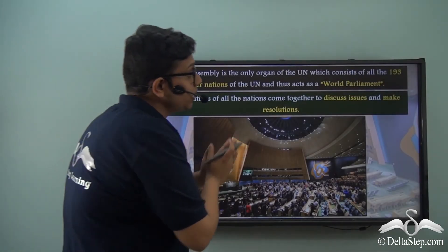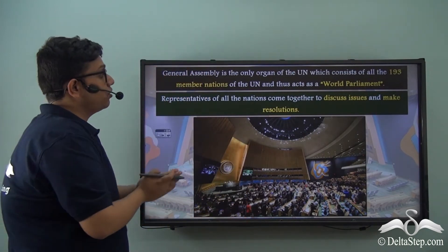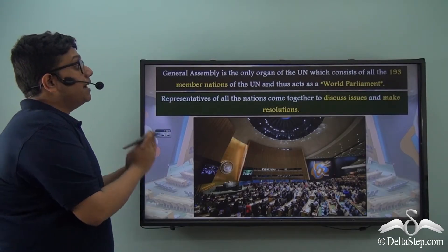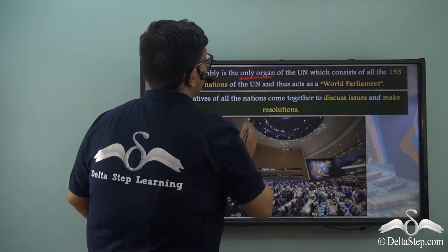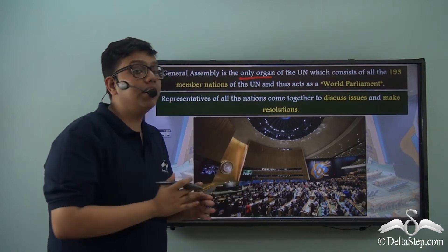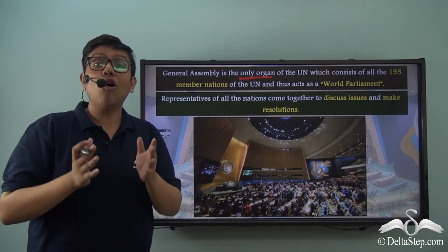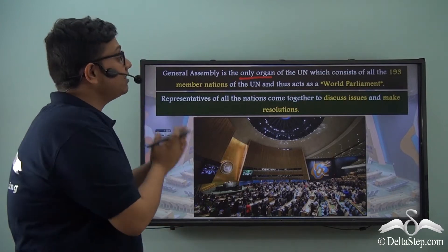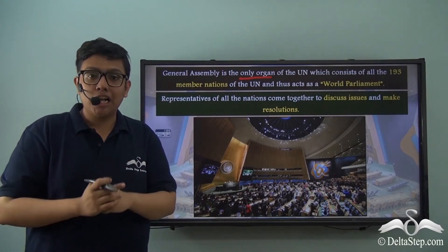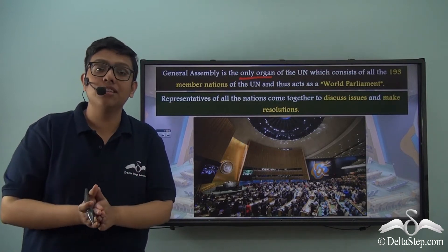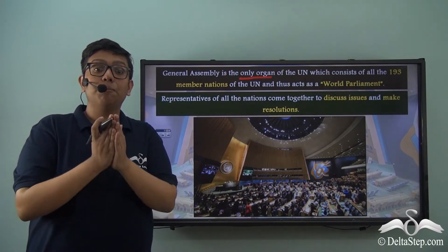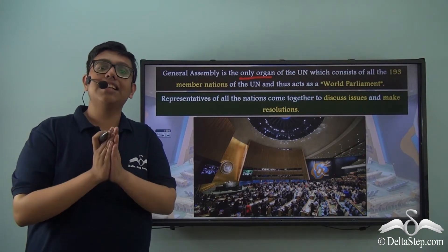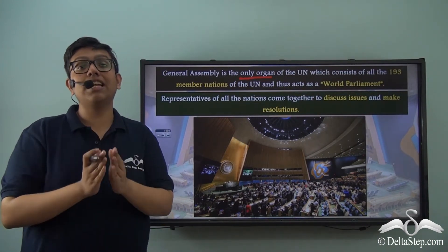The 193 member nations of the United Nations are members of the General Assembly as well. In fact, the General Assembly is the only organ of the United Nations where all 193 members are also a part of it automatically. This allows the General Assembly to be a unique platform for multilateral discussion covering the wide spectrum of various international issues as mentioned in the UN Charter.